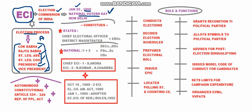ECI is headquartered at New Delhi, where the ECI secretariat also works. It is an autonomous body, meaning it has freedom of working, and it is a constitutional body that derives its authority from Articles 324 to 329 of the Indian Constitution.